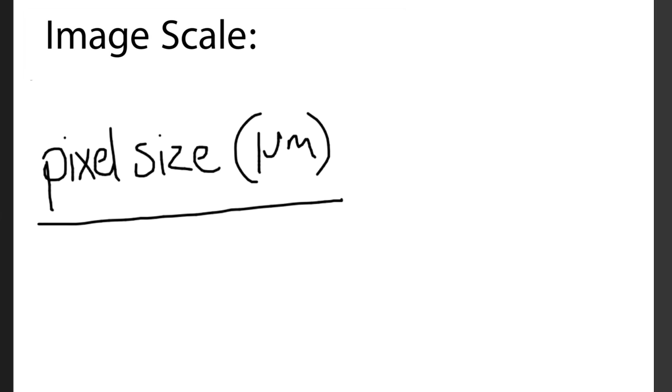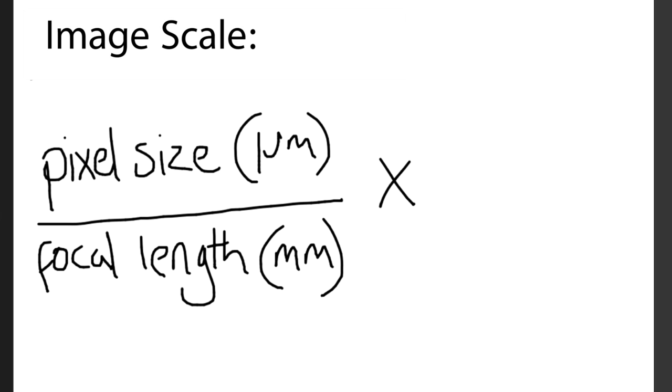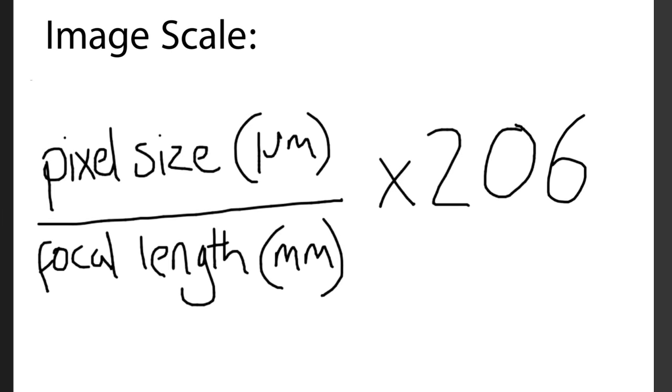So probably the first thing to look at is image scale. This is simply the pixel size in micrometers divided by the focal length in millimeters, multiplied by a magic number of 206, and the value you get is the number of arc seconds per pixel. This value should ideally be in the range of one to two.